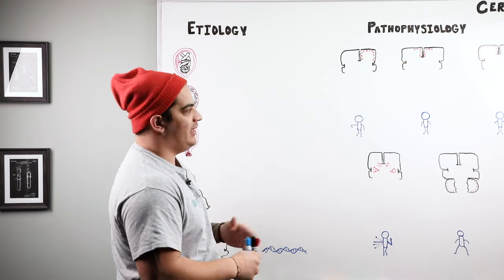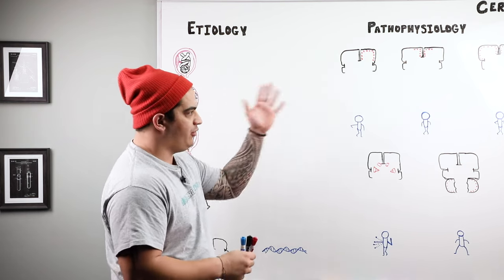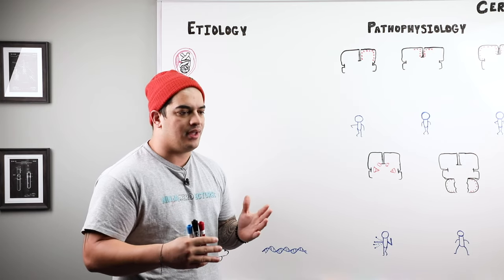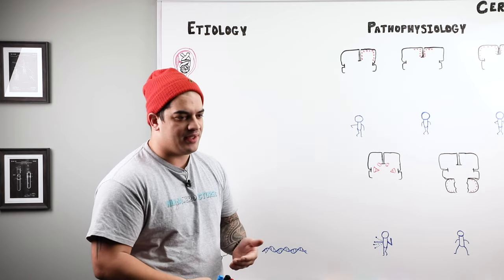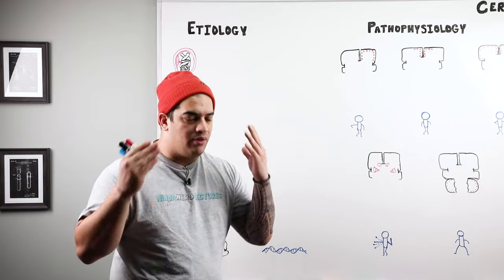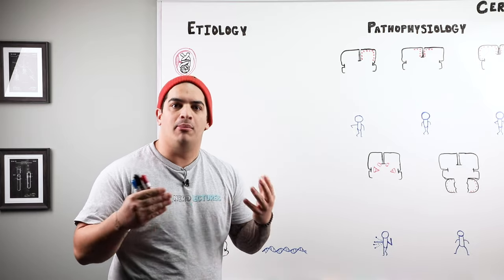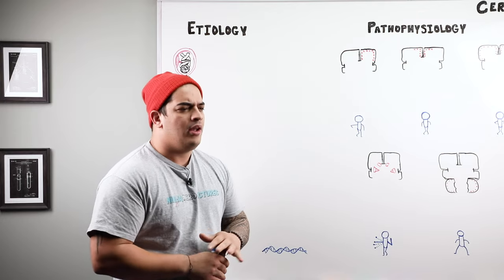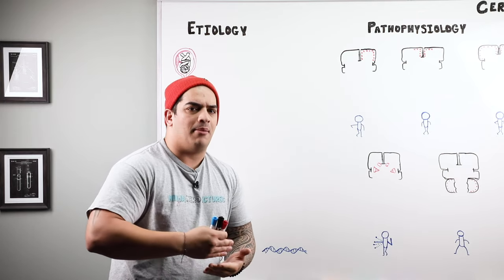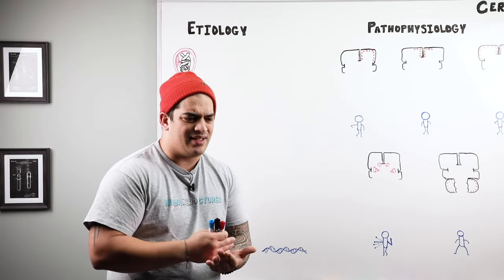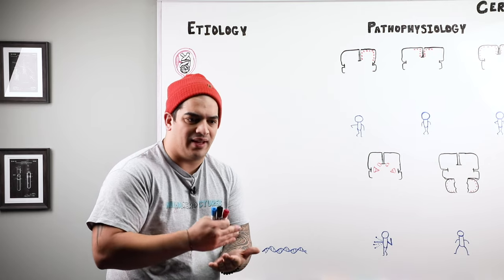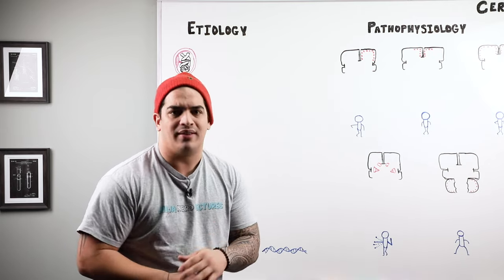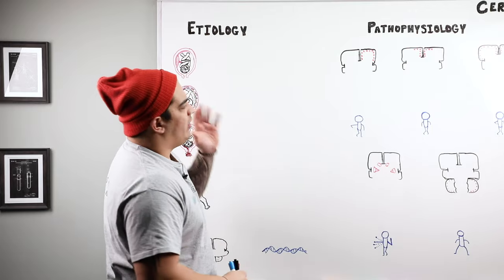Before we start on the etiology, the first thing I want you guys to know is how do we define cerebral palsy? It is a neurodevelopmental disorder — an upper motor neuron type of lesion — and it's important to remember that it's non-progressive in nature. So the disease itself generally does not get worse; the actual damage doesn't progress throughout time.